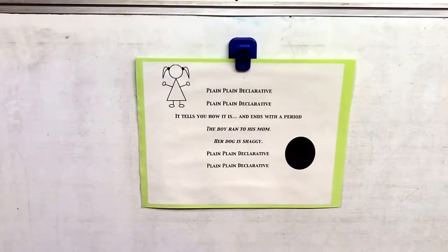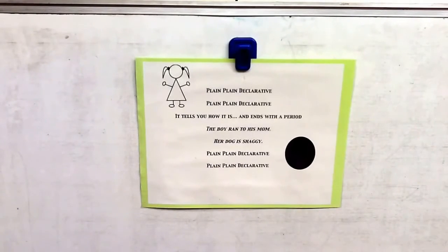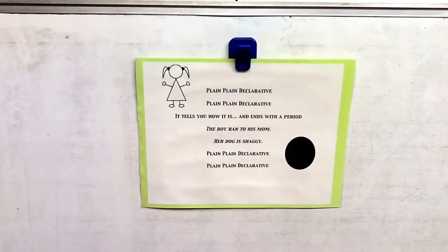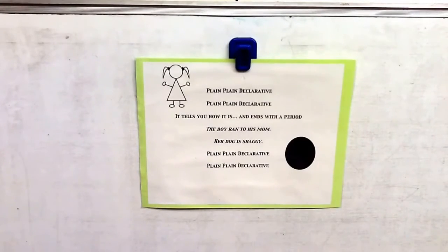We're going to practice singing the song today. First, you're going to listen to me sing the song. Then, on your tasks, you can read the song and sing along. Then, the next task, we're going to practice writing these types of sentences. So, here is my plain, plain declarative song. I'm going to read it through the first time, then I'm going to sing it.